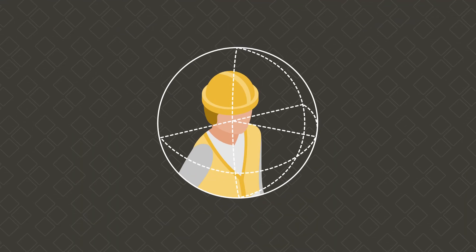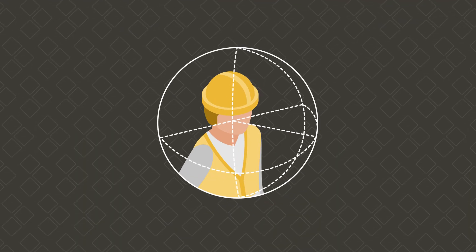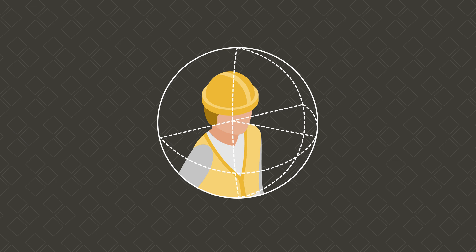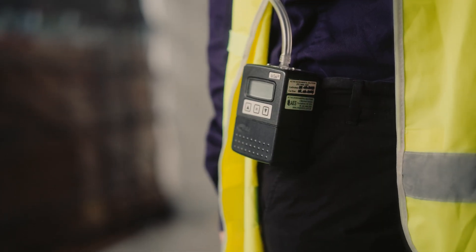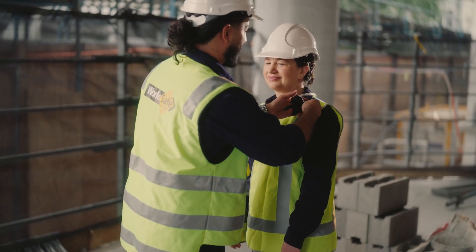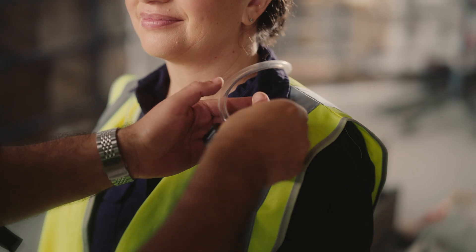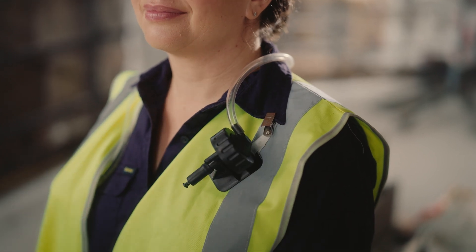Air monitoring enables employers to understand what level of respirable crystalline silica a worker is potentially breathing in. In order to compare a person's exposures against the exposure standard, measurements must be made in a person's breathing zone. Air monitoring involves an employee wearing a pump with an air sampling device attached and positioned in the worker's breathing zone.